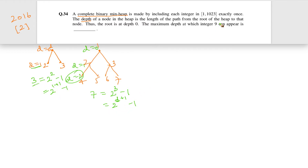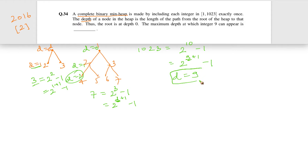Now with 1023 elements, we fit this into the pattern: 1023 equals 1024 minus 1, which is 2 raised to the power 10 minus 1, which equals 2 raised to the power (9+1) minus 1. So d equals 9 for this complete binary min heap with 1023 elements — meaning the maximum depth of any node is 9.